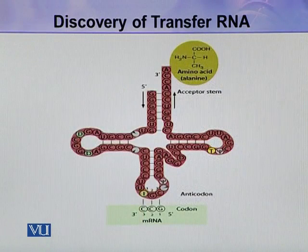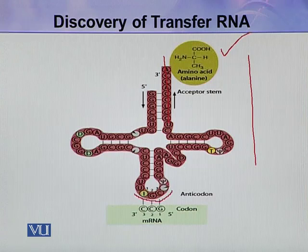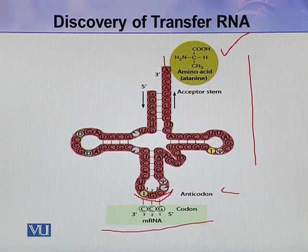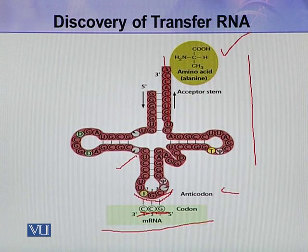Here you can see a tRNA molecule. It has one attached amino acid. This is the acceptor stem where the amino acid is attached, and here is the sequence of three bases — this is the anticodon. Similarly, this is an mRNA molecule, which will act as template for protein synthesis. On this template RNA there is also a specific sequence of bases called the codon. In this way, the anticodon present on the tRNA identifies a specific codon on the mRNA and binds to it.